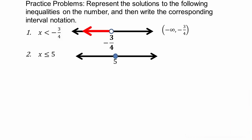For x less than or equal to 5: 5 is included and everything below it. This is the same as the previous example except we use a square bracket at 5. So the interval notation is negative infinity to 5, with a square bracket at 5. Use a square bracket when including the number, and a round bracket when not including it.